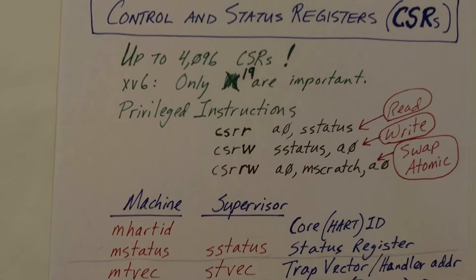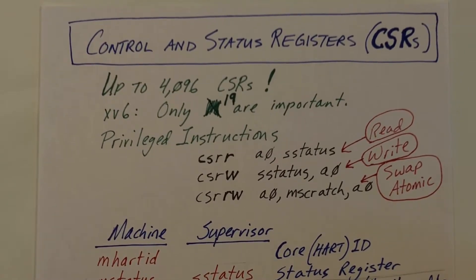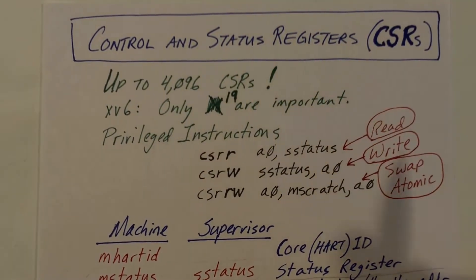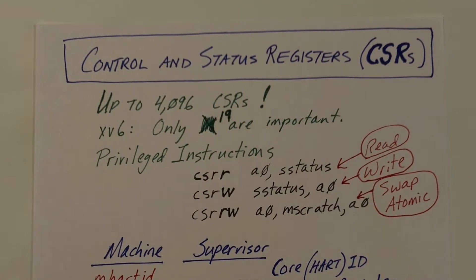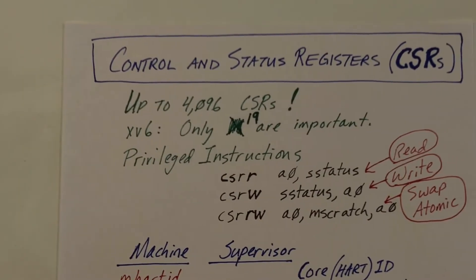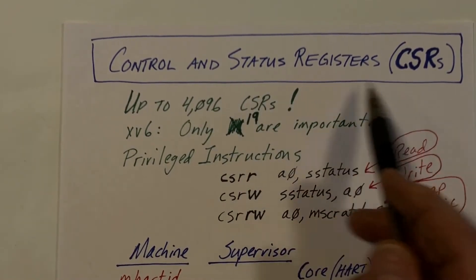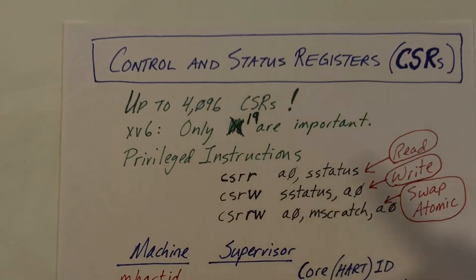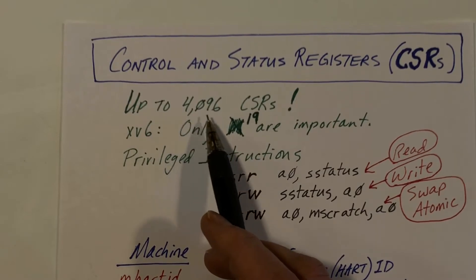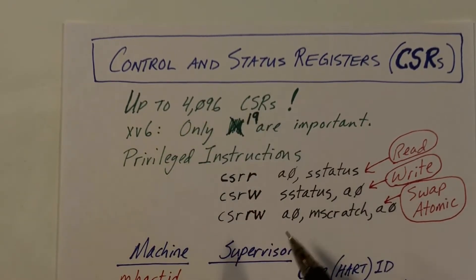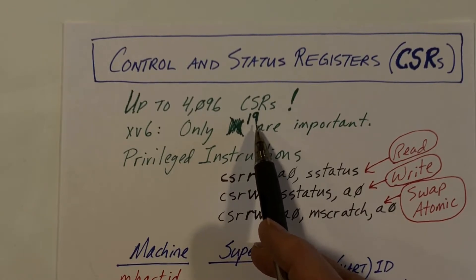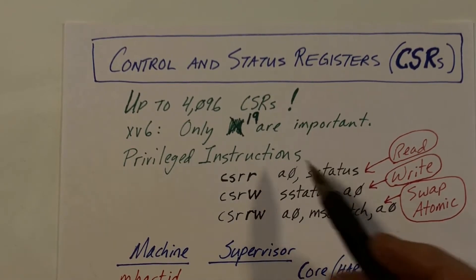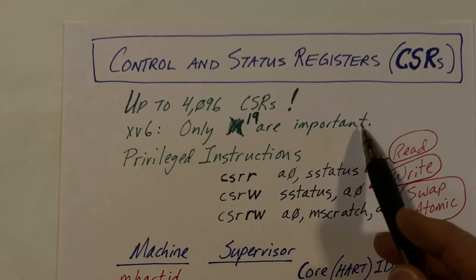Now let's move on to supervisor mode and machine mode. We won't be going over individual instructions — the usual add, move, load, store, test, branch, and so on. In addition to the general-purpose registers, there are control and status registers, CSRs. The architecture accommodates up to 4K of these registers. I'm going to present a simplified model and discuss only 19 of these CSRs.